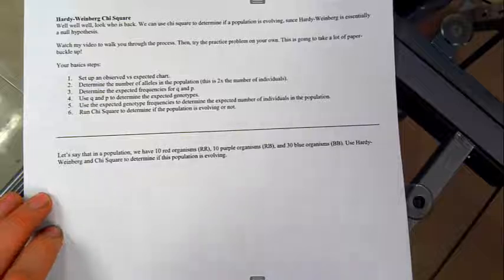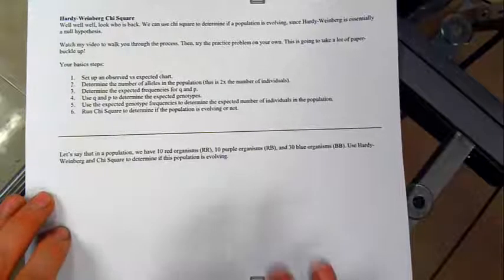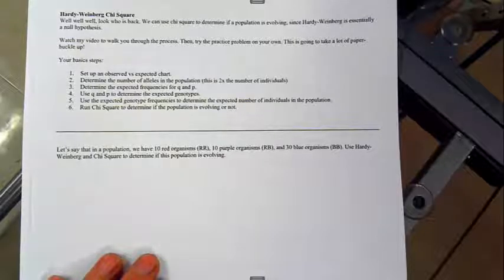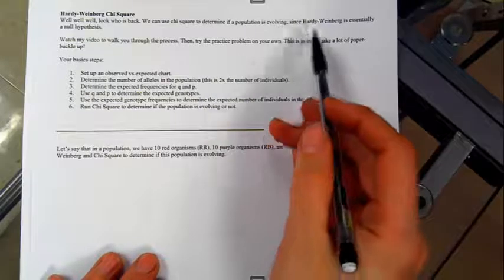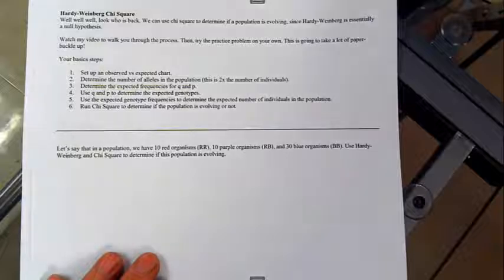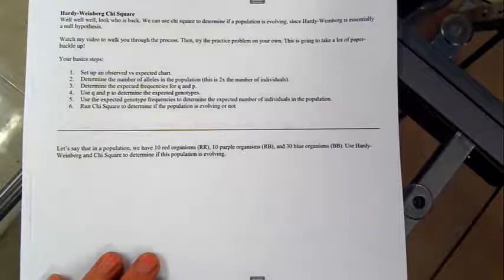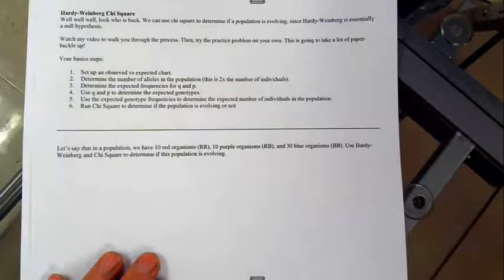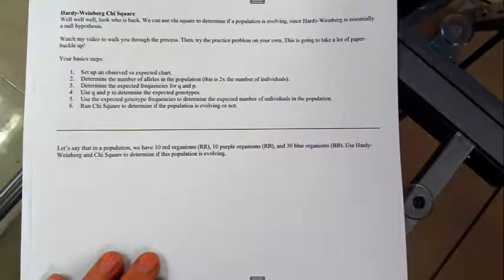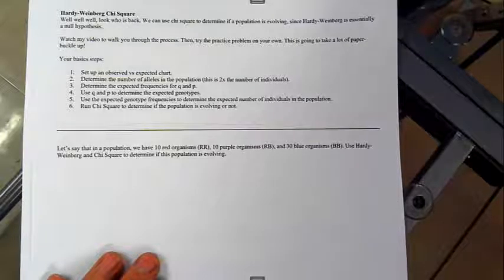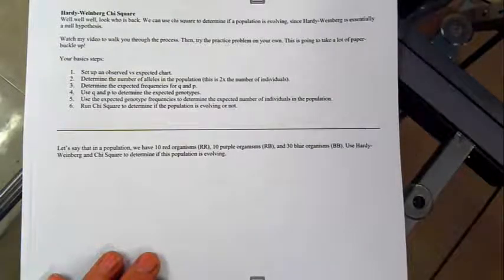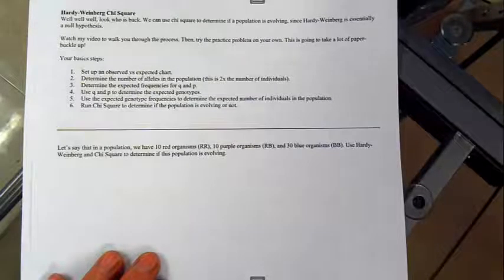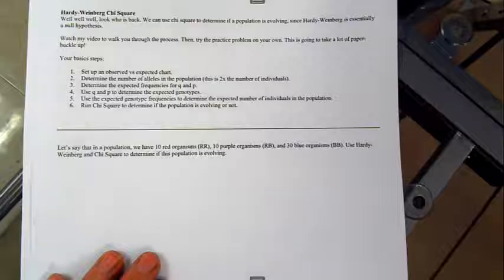because we're going to just jump right into components of Hardy-Weinberg that you should know: p, q, p-squared, q-squared, 2pq. We are going to use Hardy-Weinberg chi-square to determine if a population is evolving. Hardy-Weinberg is basically a null hypothesis. If those five conditions are met, then a population would not be evolving. But as we've talked about, those five conditions are always violated, right? So populations are basically evolving. But we can use chi-square to numerically prove that a population is evolving or not.